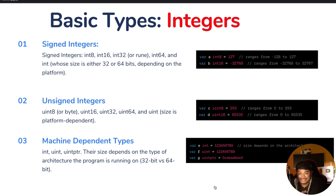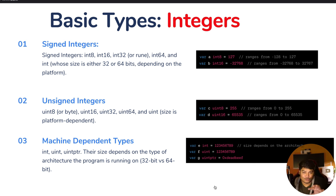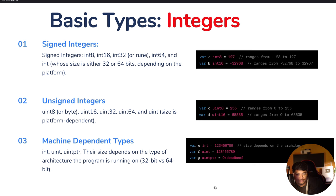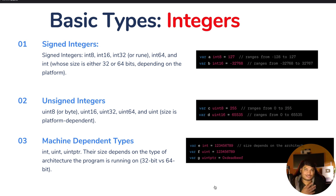The first basic type is integers. There are three kinds: signed integers (int8, int16, int32, int64, and int — size either 32 or 64 bits depending on the platform); unsigned integers (uint8 or byte, uint16, uint32, uint64, and uint — size platform-dependent); and machine-dependent types (int, uint, uintptr — their size depends on the architecture, 32-bit or 64-bit).